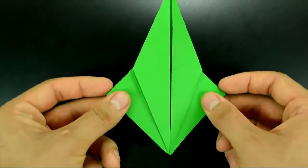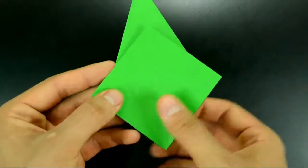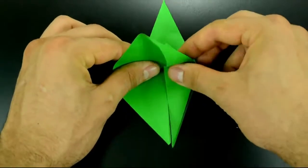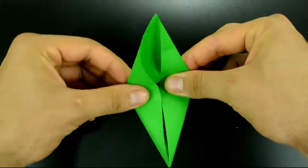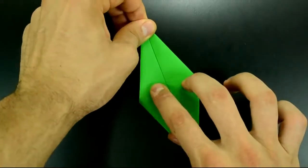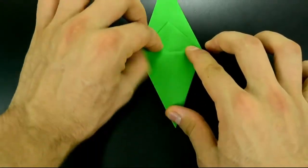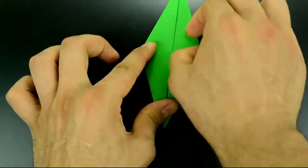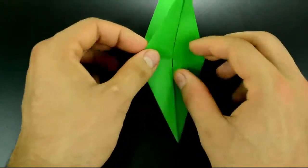Turn over and repeat exactly the same. First, lift the first layer. Both sides to the center. Reinforce the new flap. And fold up. Right.